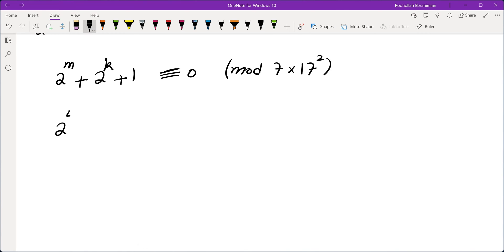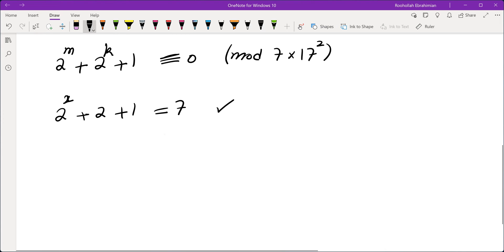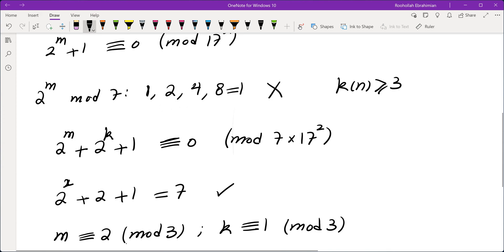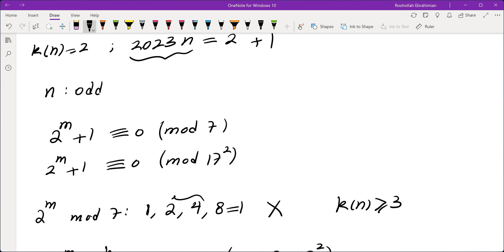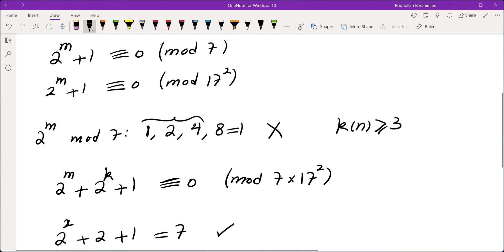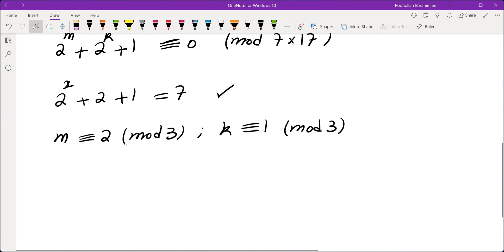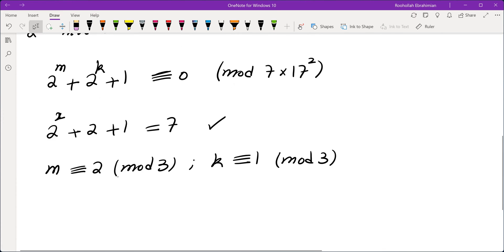So we're going to have to test this mod 7 and then mod 17 squared. Mod 7, we have 2 squared, 2 and 1. That's just 7, which means we can create this one as long as we make sure that m is 2 mod 3 and k is 1 mod 3. Where do I get the mod 3 from? From this cycle. This cycle has length 3, which means the repetition is every 3 integers. So what that means is I can make this one multiple of 7.